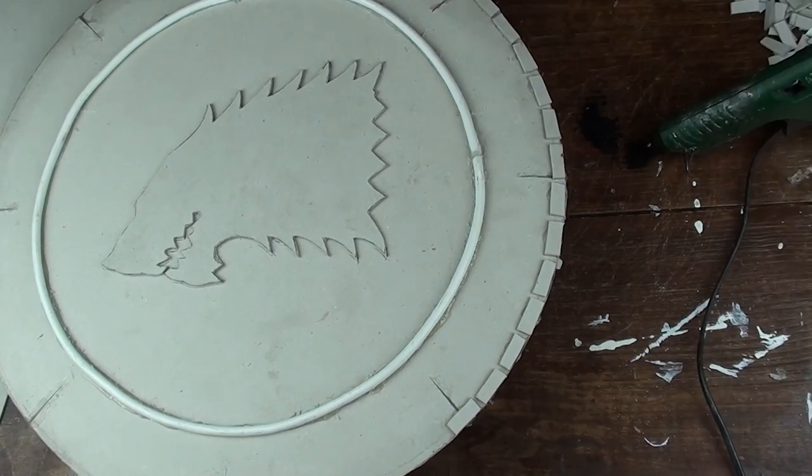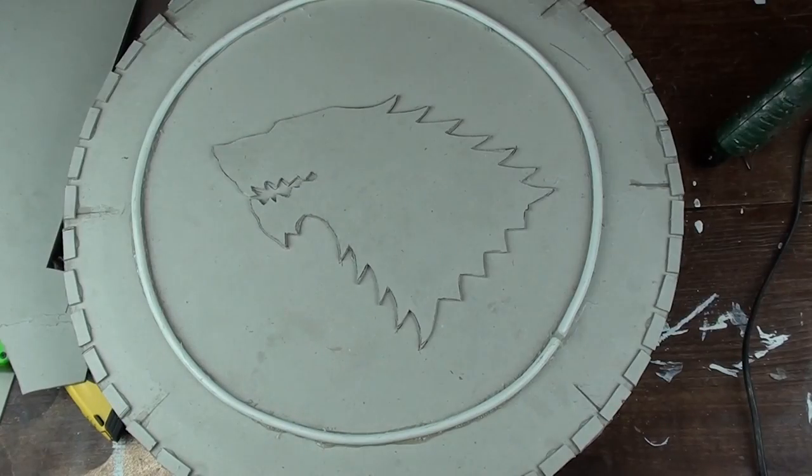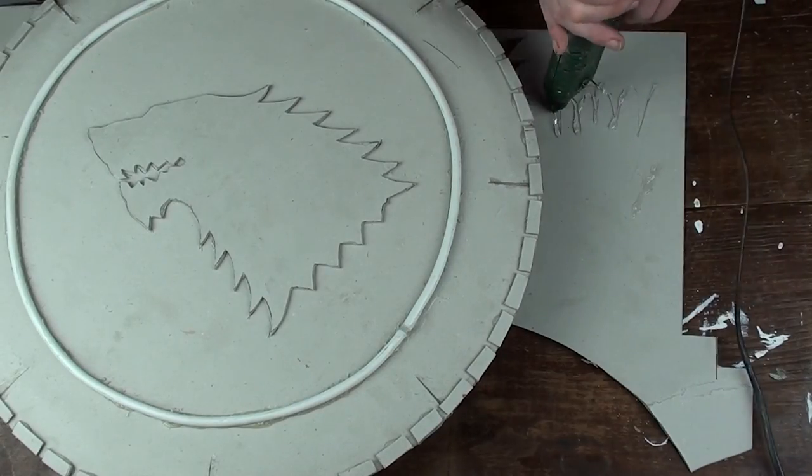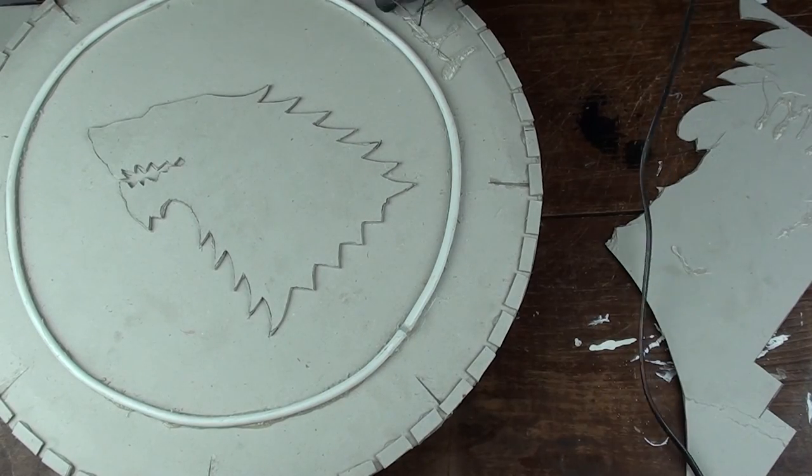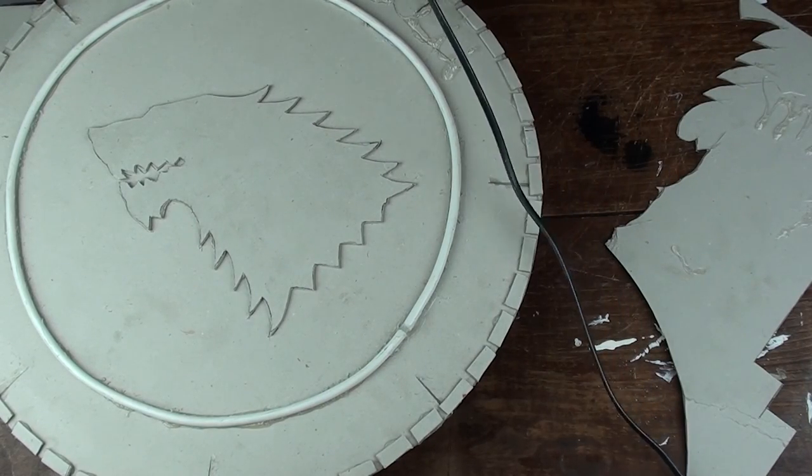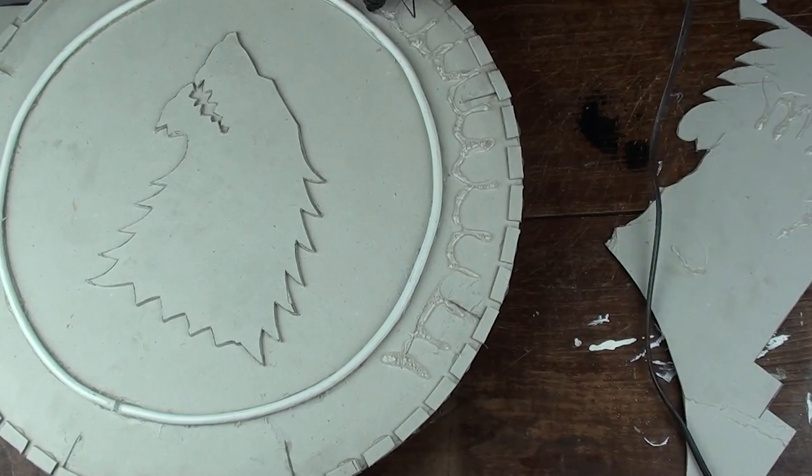Now the next part of the build I rushed, I should have taken my time. I advise you to do the same. Grab your glue gun or your glue, and you're just going to make a little squiggly pattern in that little space between the ring and the outside of the shield.